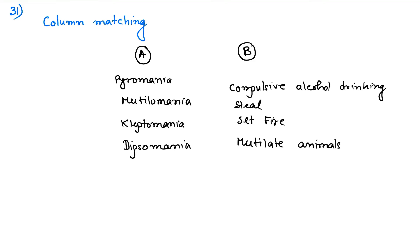As you can see, the first option was pyromania - pyromania is obsession of setting fire. Then mutilomania, which is the obsession to mutilate animals. Kleptomania is obsession of stealing, and dipsomania is obsession of compulsive alcohol drinking.